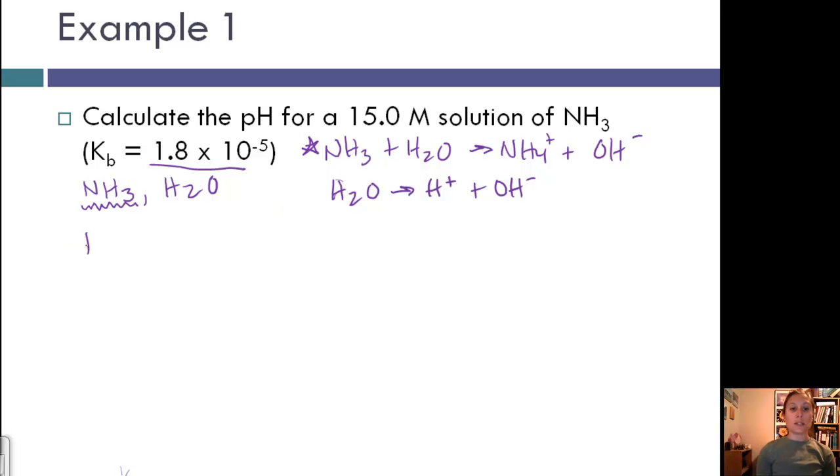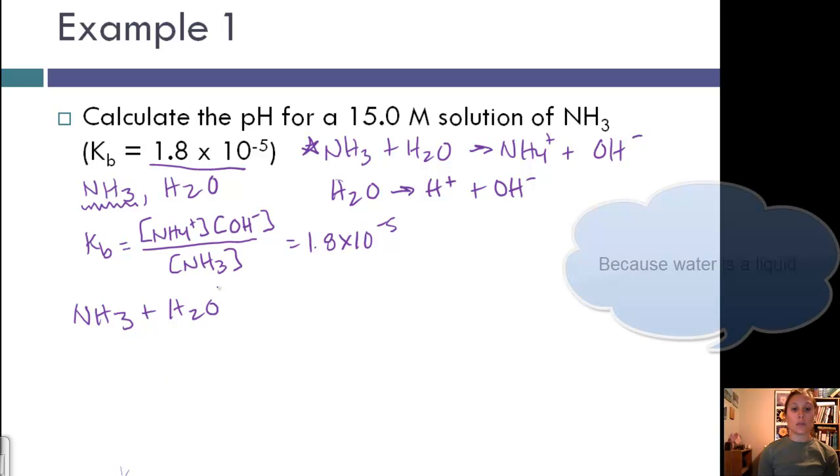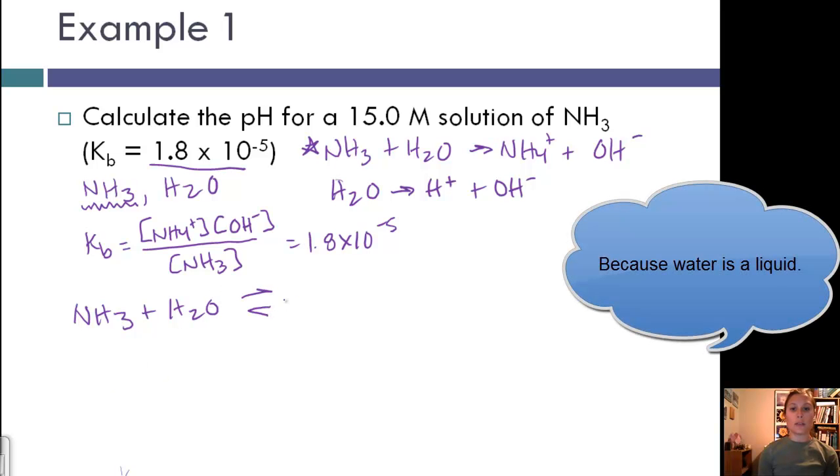Now we can write the equilibrium expression. Kb is equal to the concentration of NH4+, OH-, and our NH3 on the bottom, and that's equal to 1.8 times 10 to the negative fifth. The next thing that we want to do is our ICE. Let's rewrite our reaction here. We're actually not going to include water when we do our equilibrium.